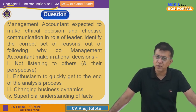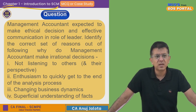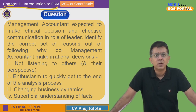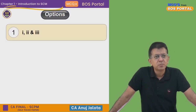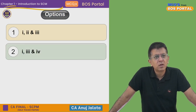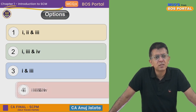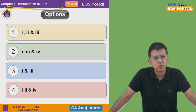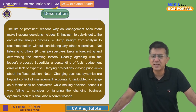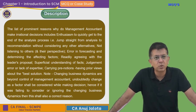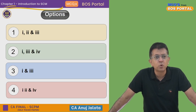So first is correct, second is correct, third is not within the hands of the management accountant, and fourth is correct. Looking at the options: one, two and three; one, three and four; one and three; and one, two and four — the correct answer is one, two and four. Changing business dynamics does not apply, so the fourth option is the correct answer.